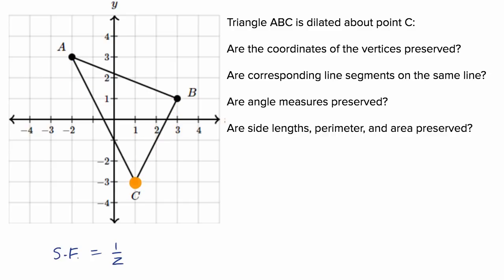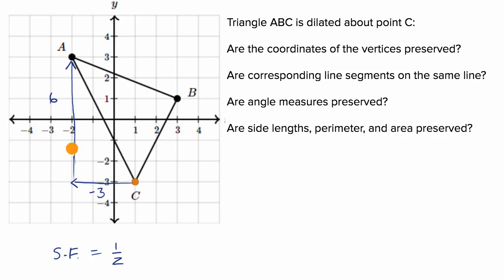This is interesting because we're dilating around a point that happens to be one of the vertices of the triangle. To go from C to A, we go three to the left and six up. With a scale factor of one half, we go one and a half to the left and three up — ending up right over there. This is A prime. Notice it's sitting on segment AC, because our center of dilation is one of the vertices of the triangle.